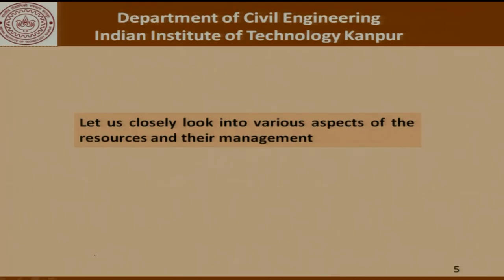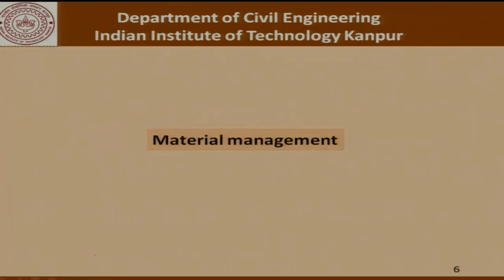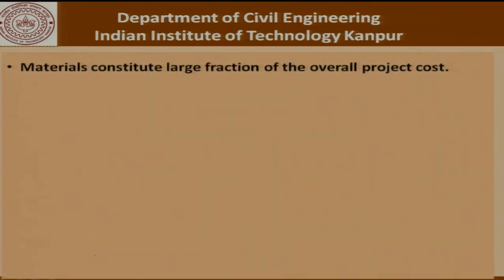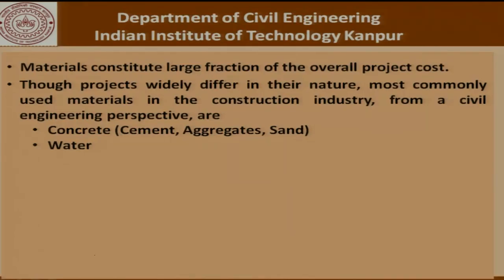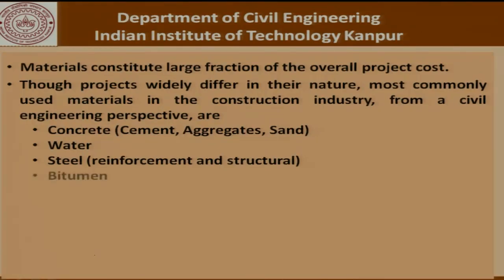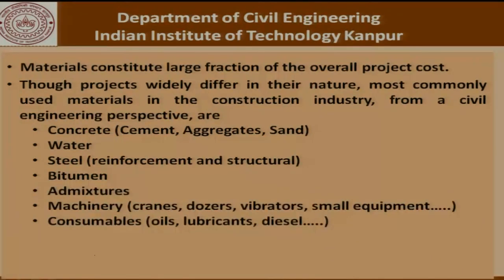Let us look closely at the various aspects of resources and their management. Coming to the first part of the discussion — materials management. Materials constitute a large fraction of the overall project cost. Though projects widely differ in their nature, the most commonly used materials in the construction industry from a civil engineering perspective could be concrete — which includes cement, aggregate, sand or water — steel used as reinforcement or structural steel, bitumen which is very important for road construction, admixtures, machinery, consumables and so on.